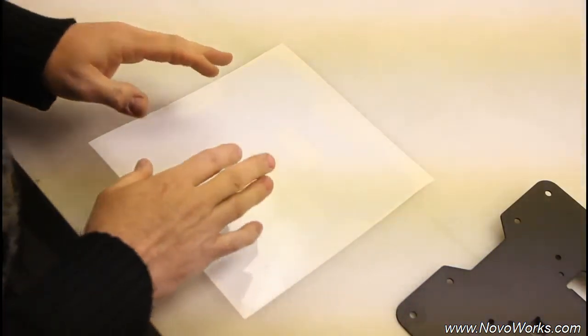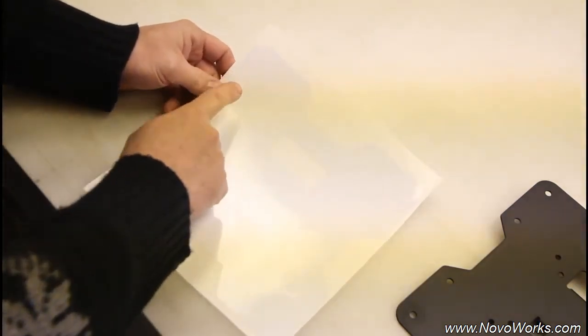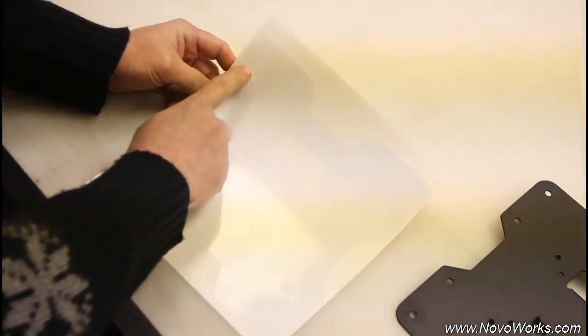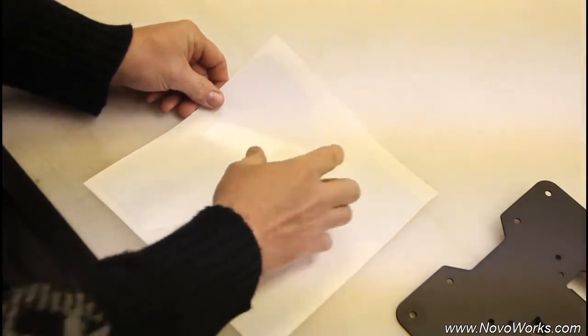So what we typically suggest you do is you just peel back enough that you've got alignment references. So in this case we've got obviously the corner edging all the way around here. In this particular example we've also got this center cutout.